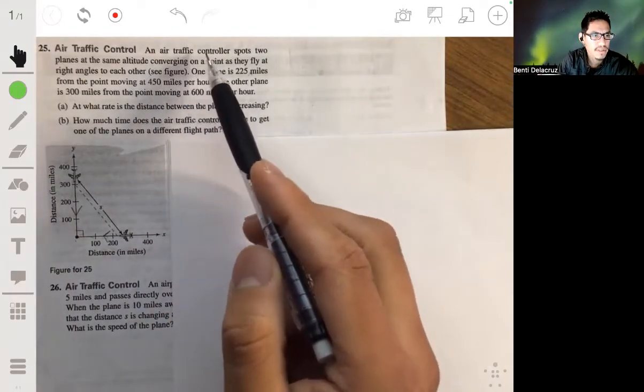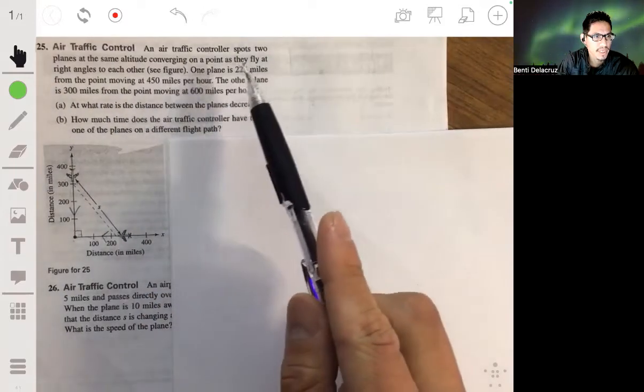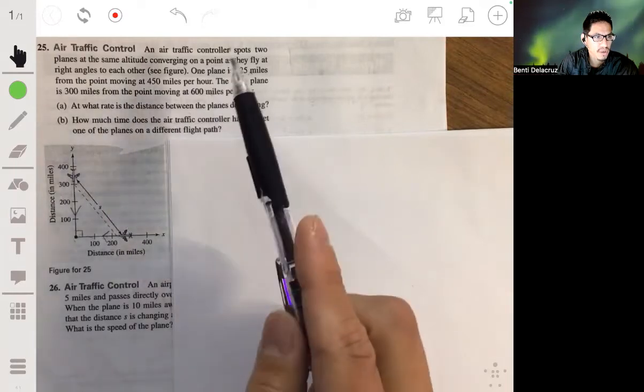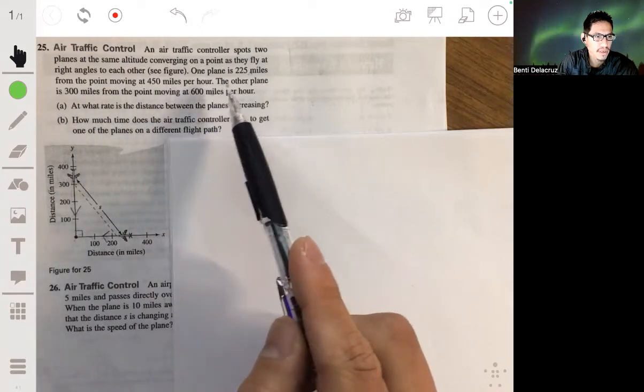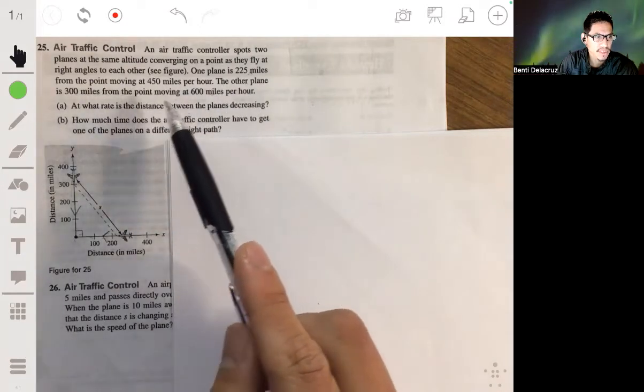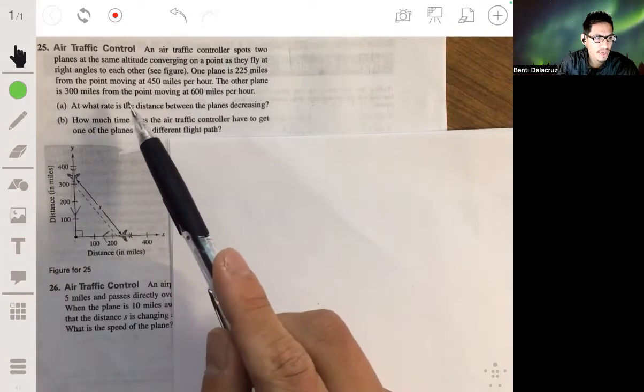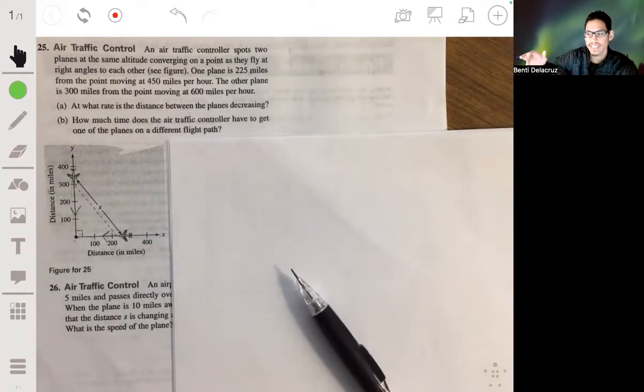Alright, so we have that air traffic controller spots two planes at the same altitude converging on a point as they fly at right angles to each other, as shown in this figure. One plane is 225 miles from the point moving at 450 miles per hour. The other is 300 miles from the point moving at 600 miles per hour. So in part A, we have to find the rate that the distance between the planes is decreasing.